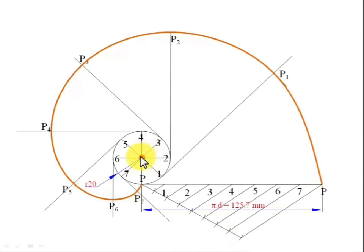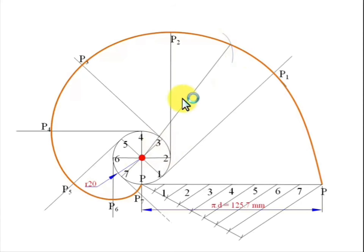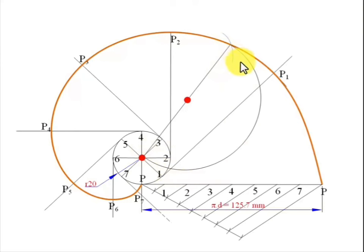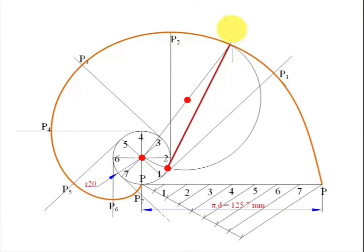We need to draw a tangent and normal at a distance of 100 millimeters from the center. With the center and a radius of 100mm, cut an arc on the involute — this point lies 100mm from the center. Join both points with a line of length 100mm and find its midpoint at 50mm. With this midpoint and that half-length as radius, draw a semicircle. Where this semicircle intersects the circle's circumference, mark a point and join it to the point on the involute — that gives the normal. A line perpendicular to this normal is the tangent, which will just touch the curve.